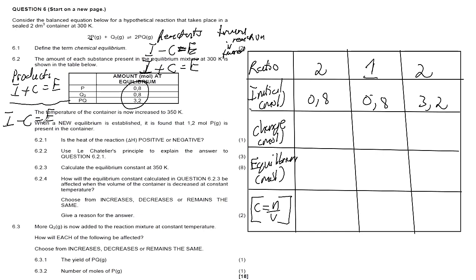We are adding to the reactants but subtracting from the products, because favoring the reverse reaction means we're using up products to form back the reactants. At the new equilibrium, 1.2 mol of P is present. We have Q₂ and PQ with ratios of 2 and 2.